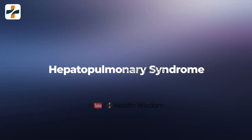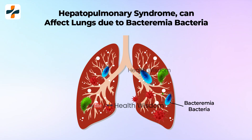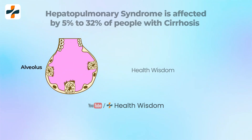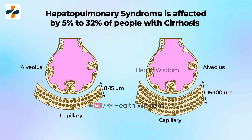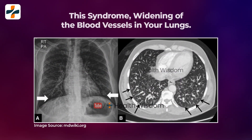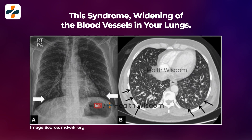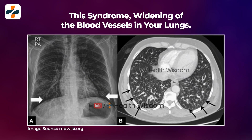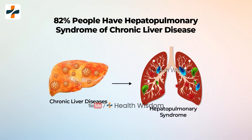2. Hepatopulmonary Syndrome. This is a syndrome that affects about 5% to 32% of people with cirrhosis. In this syndrome, there is a widening of the blood vessels in the lungs, which compromises their ability to uptake oxygen. As per an NIH study, 82% of people have symptoms of chronic liver disease before developing hepatopulmonary syndrome symptoms.